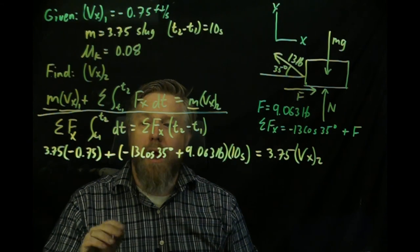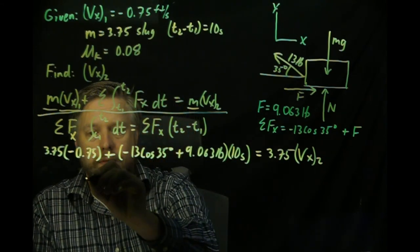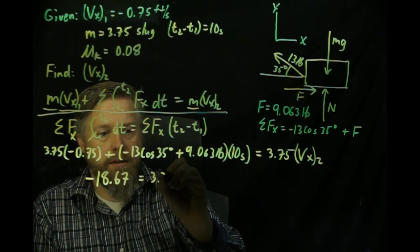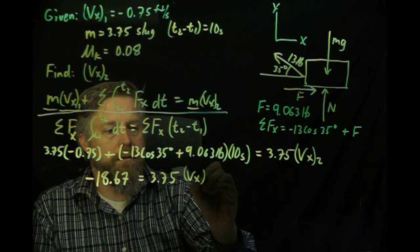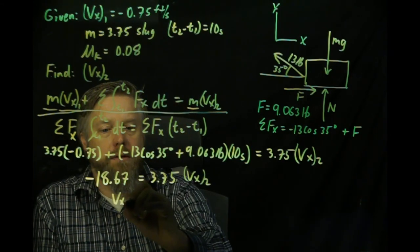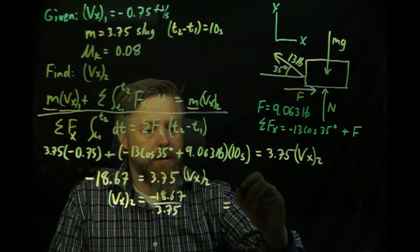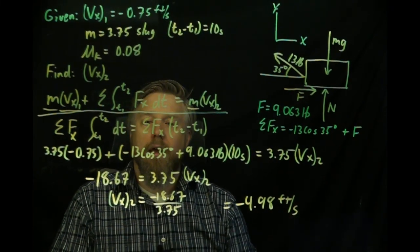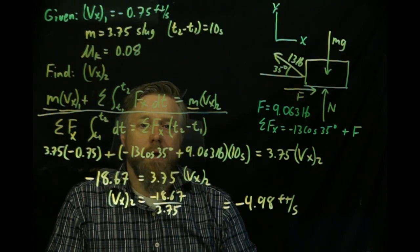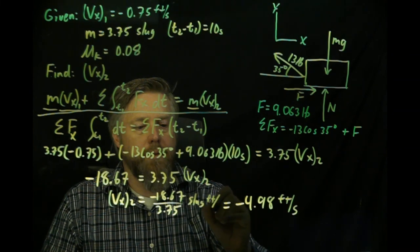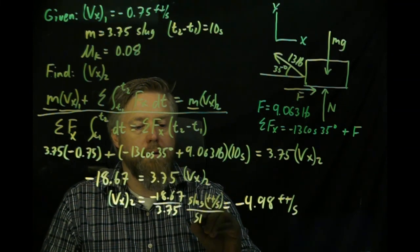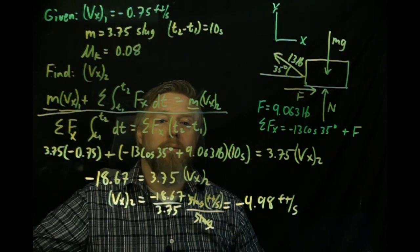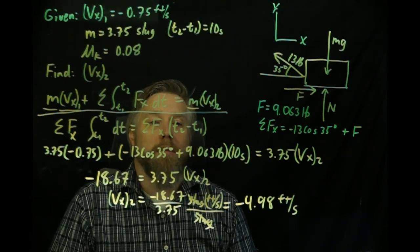Now we just have to do a little bit of math. Adding everything up, we get negative 18.67 equals 3.75 times vx2. Dividing by 3.75, we get vx2 equals negative 4.98 feet per second. Doing a quick unit check — using slug·feet per second divided by slugs — we get feet per second. Hopefully that was helpful. In the next video, we're going to see how the principle of linear impulse momentum relates to a system of particles.